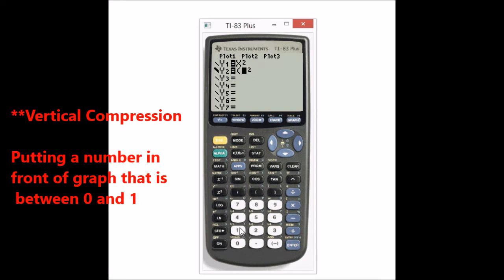Now let's say if I put a number here that's less than 1 like a fraction. Let's put 1 over 9x squared. And when I take a look at this, notice the graph gets wider. This is called a vertical compression. So it's actually pushing your graph down making it wider.